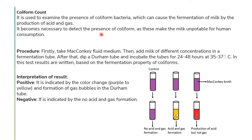It is necessary to detect the presence of coliforms as they make milk unpotable for human consumption. The procedure uses MacConkey's broth with a Durham's tube inserted in it. Different concentrations of milk are added to these fermentation tubes and incubated for 24 to 48 hours at 35 to 37°C.